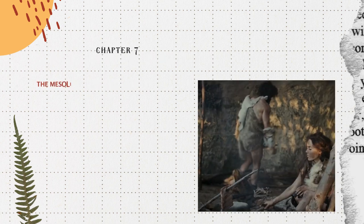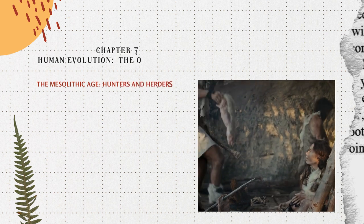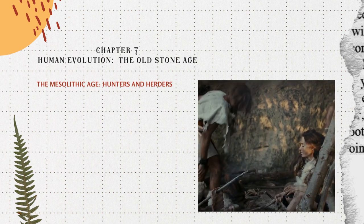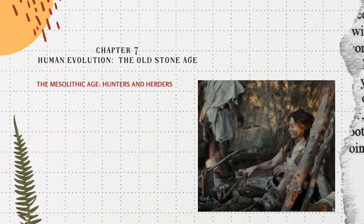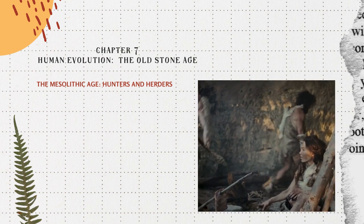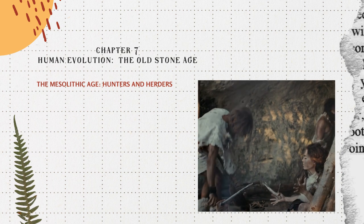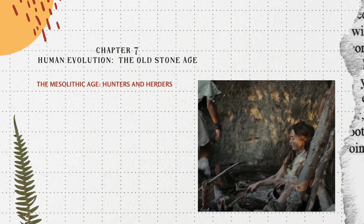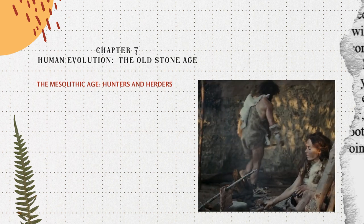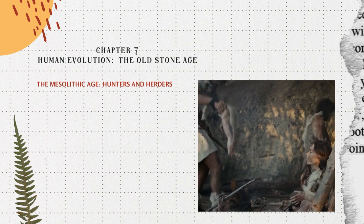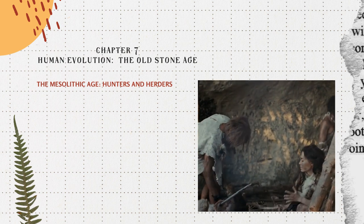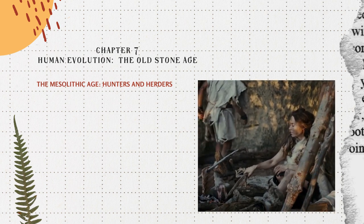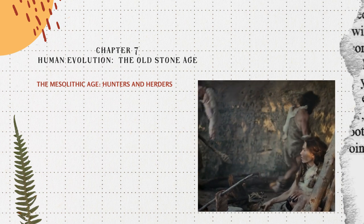The Mesolithic Age – Hunters and Herders: The Upper Paleolithic Age came to an end with the end of the ice age around 10,000 BC. The Pleistocene, marked by a succession of ice ages, coincided with the Paleolithic Age and lasted from 2 million years ago to 12,000 BC. When it ended, the climate became warm and rainy. Climatic changes brought about changes in fauna and flora. Humans took advantage of adequate rainfall, dense vegetation and forest. Since then, no major changes have appeared in climatic conditions.